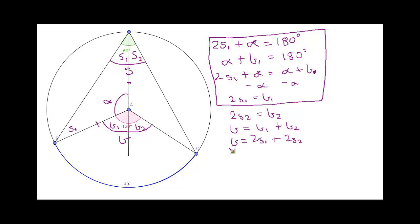So, now we can actually simplify this equation by taking the two out the front. So, then we would get B equals 2 times S1 plus S2.